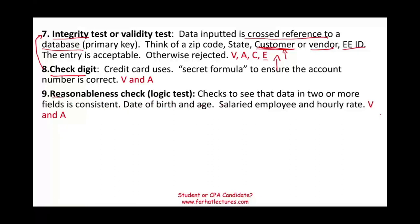You could also have a reasonableness check or logic test. This checks whether data in two or more fields is consistent. For example, you can compare date of birth and age — if there's a discrepancy, it will prompt you. Or if it's a salaried employee, they should not have any hourly rate data entered.